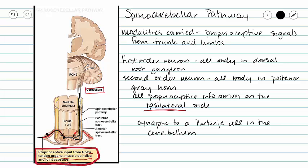Our cerebellum coordinates our motor activity. With this proprioceptive information, our cerebellum can make informed decisions about where and how to move.